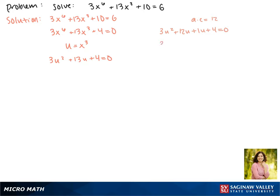Out of the first two, we can pull out a 3u, leaving us with u plus 4, and in the second group we can pull out a 1, leaving us with u plus 4. Factoring out that u plus 4 gives us 3u plus 1 times u plus 4 equals 0.